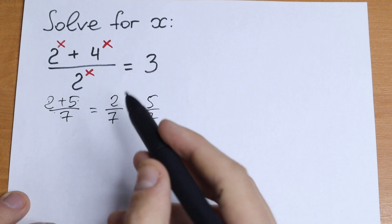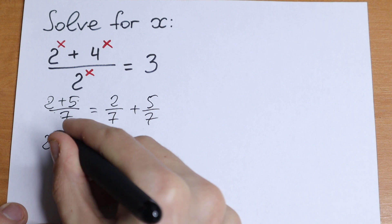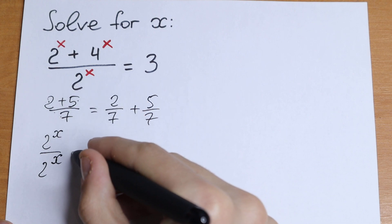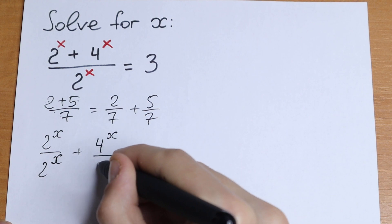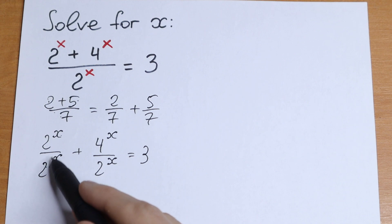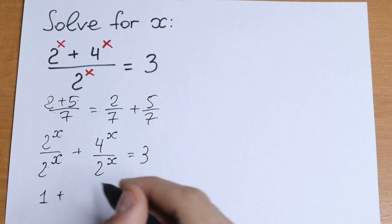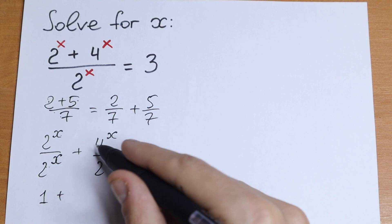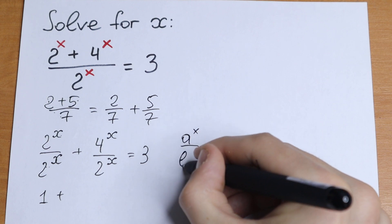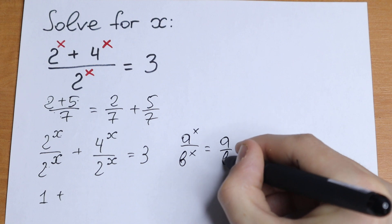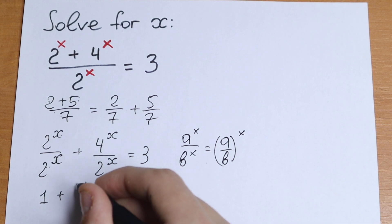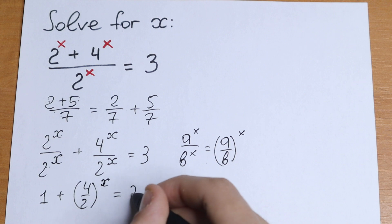Let's divide both terms in the numerator by 2 to the power x. As a result we will have 2 to the power x divided by 2 to the power x, plus 4 to the power x divided by 2 to the power x, equal to 3. Dividing the same elements gives us 1. And using the exponent rule — a to the power x divided by b to the power x equals (a over b) to the power x — we can write 4 over 2, all to the power x, equal to 3.